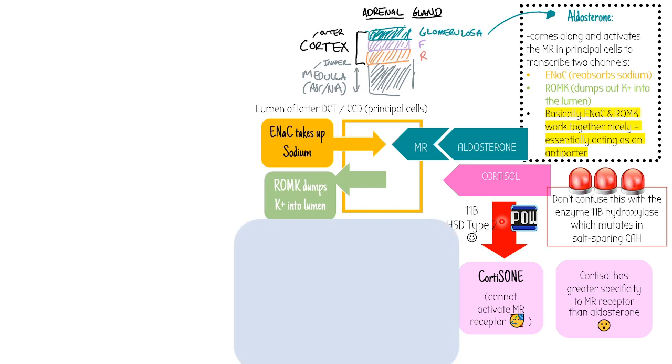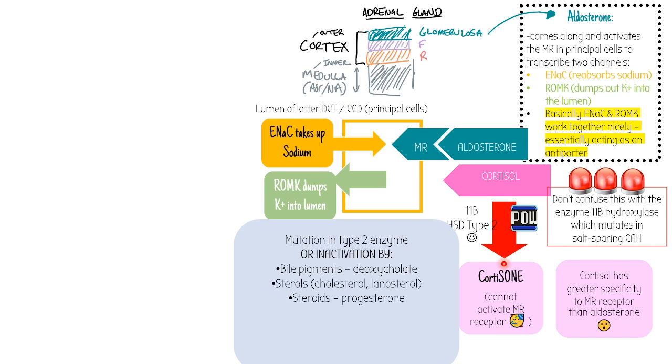So now we're going to get to our pathology. Basically, all is going well when this enzyme converts cortisol to cortisone. However, if this enzyme mutates, it can be problematic. There's a couple of things that can stop this enzyme working. For example, it can be inactivated naturally by biopigments or sterols like cholesterol, steroids such as progesterone.